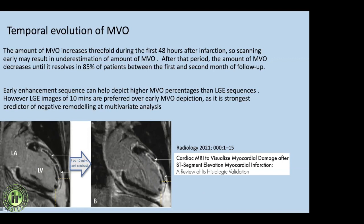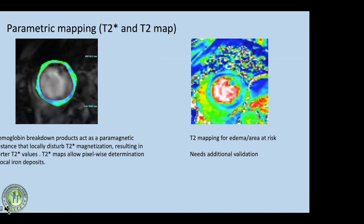It is important to modify our cardiac MRI protocol based on the clinical indication — just as we use tumor protocols for tumors. Every clinical question should guide the planning and sequences performed. It is important that we understand the physiology fully to provide the clinician with meaningful, actionable information.